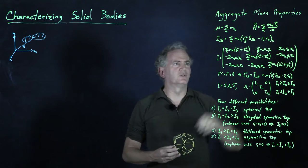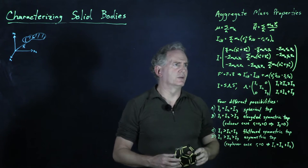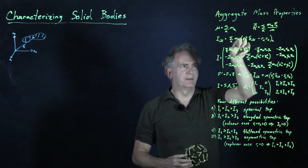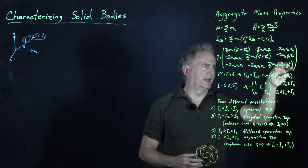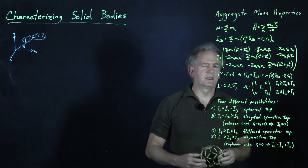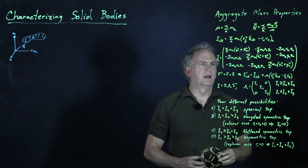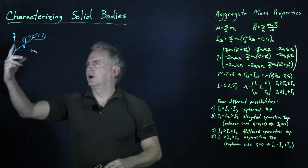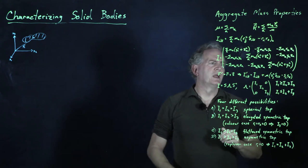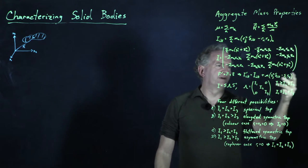The inertial tensor is defined in index form. It is most easily understood as a 3-by-3 symmetric matrix. On the main diagonal we have m(y² + z²) summed over each of the masses, m(x² + z²), and m(x² + y²), along with off-diagonal terms. By construction this matrix is symmetric and positive semi-definite, so all of its eigenvalues are greater than or equal to zero. If we shift the center of mass and recalculate the inertial tensor, the original and new calculations are related via a formula.